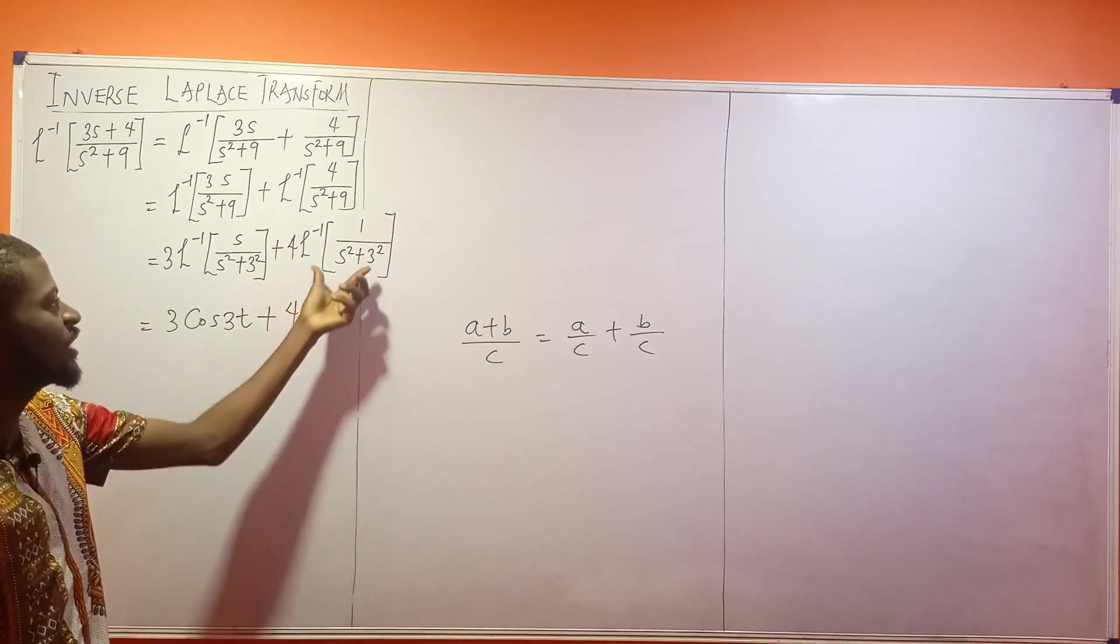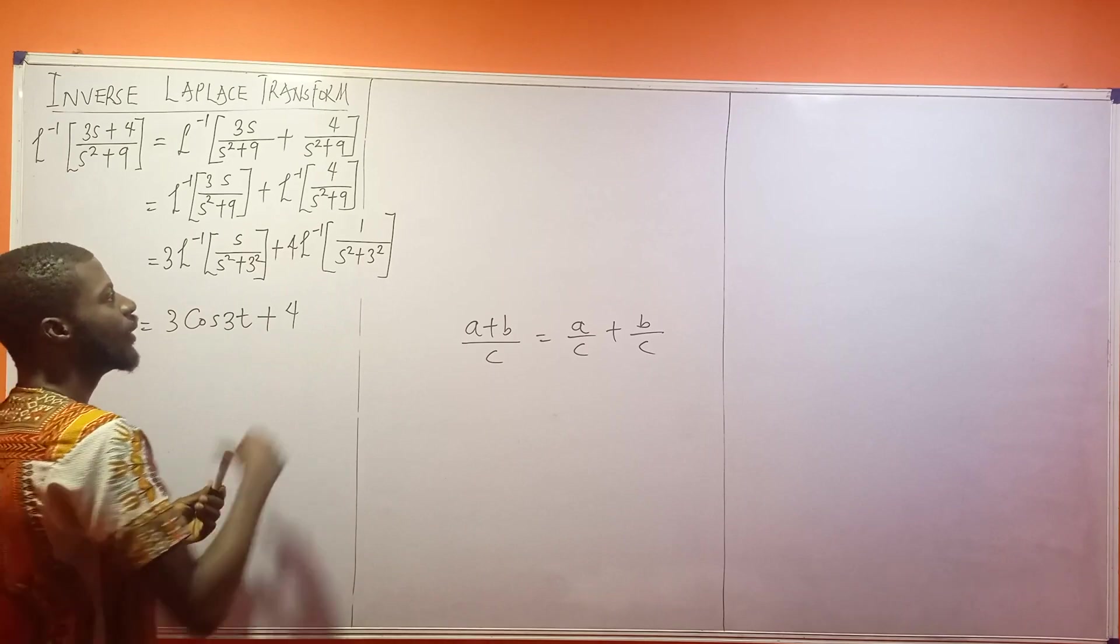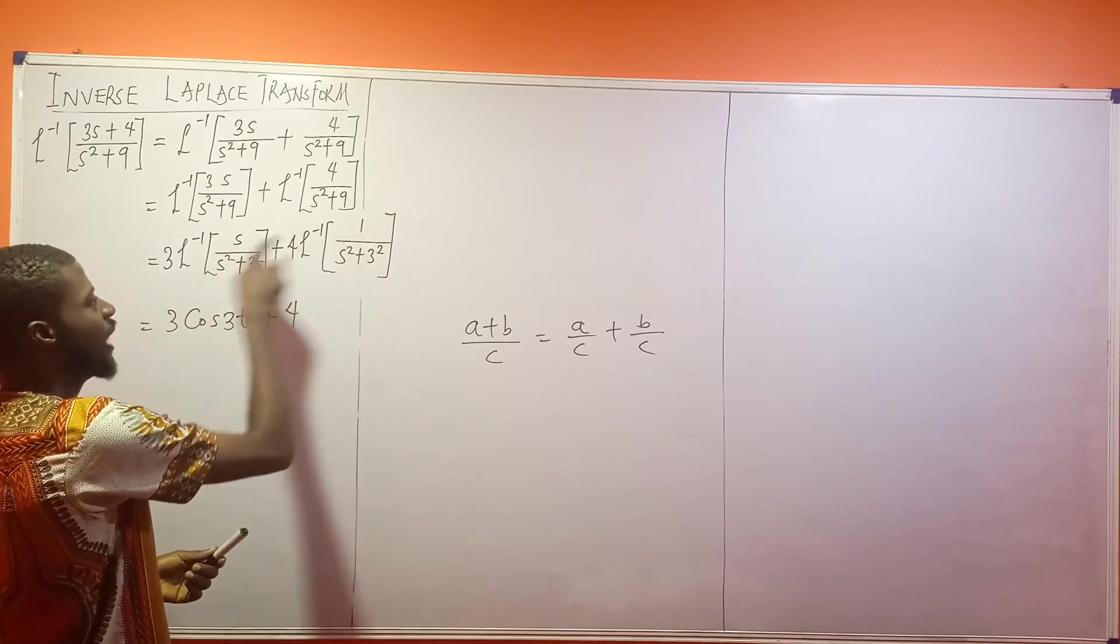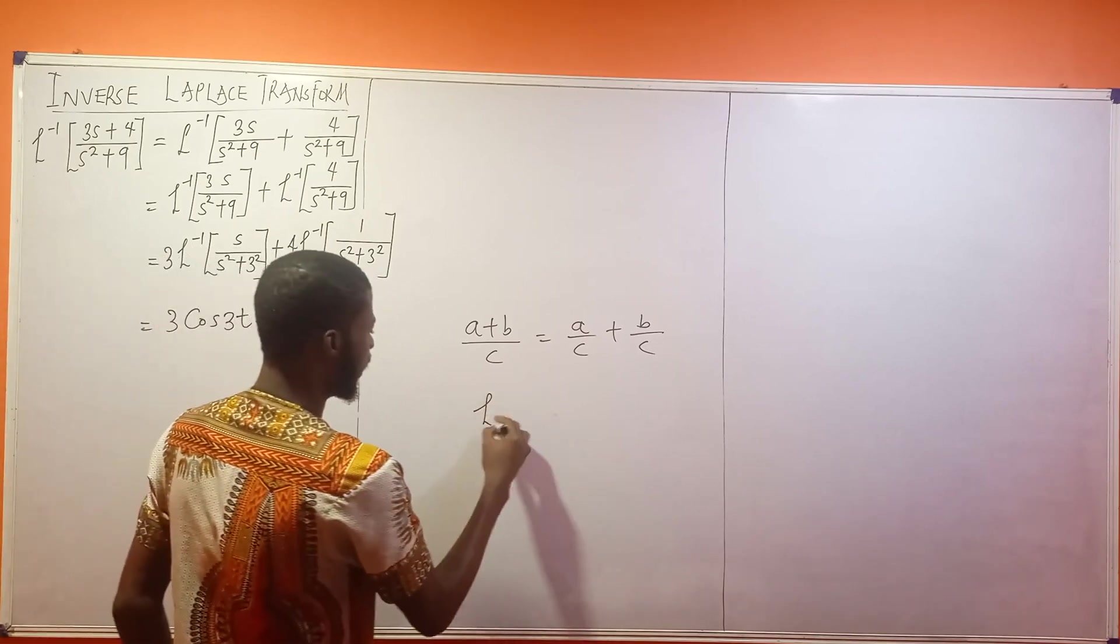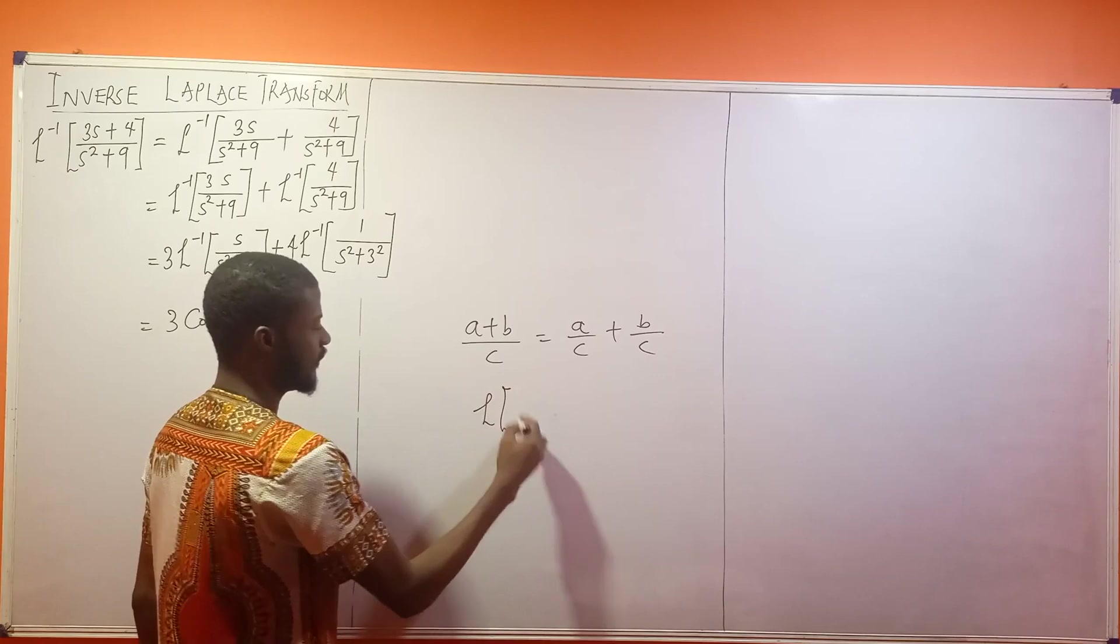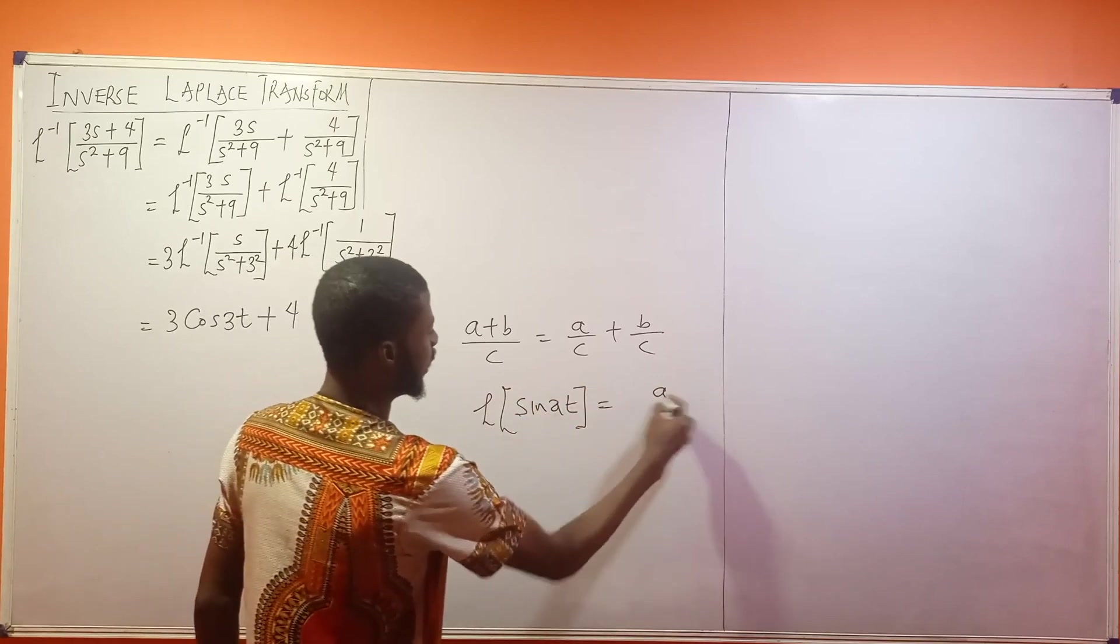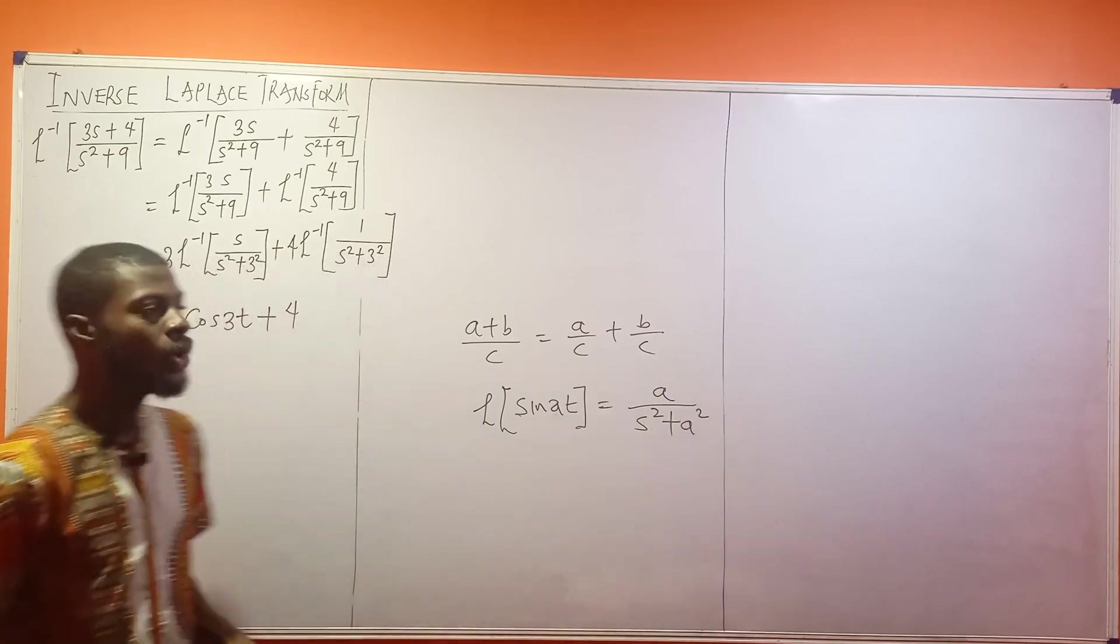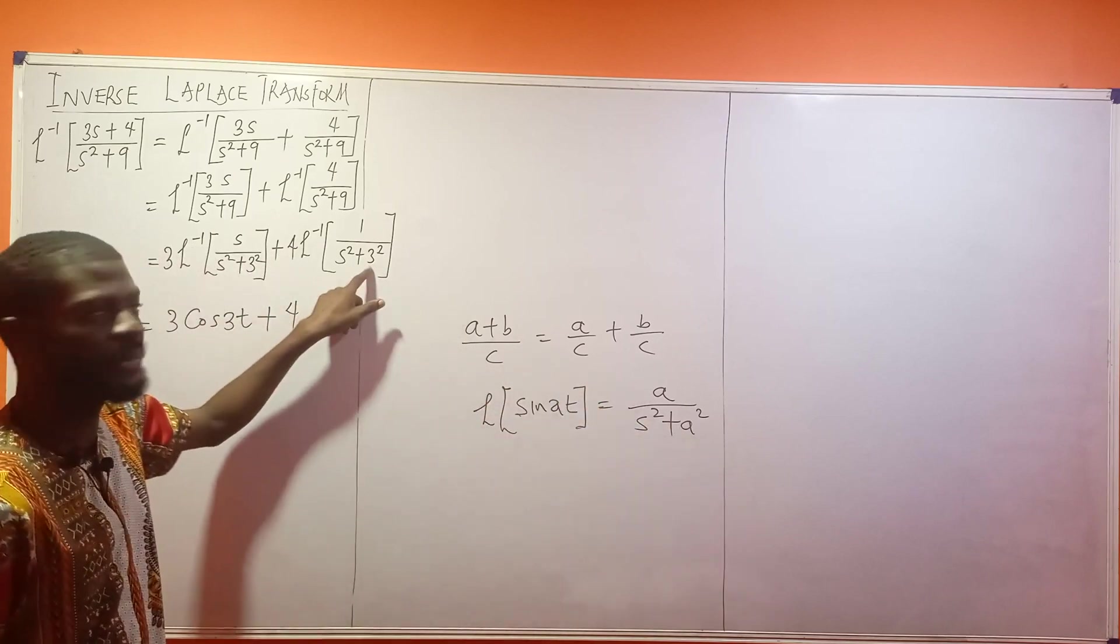4. Now I think this part would pose a little bit of issue for us. If you have a constant on top and not s, you are talking about sin. Now the Laplace transform of sin at is equal a over s squared plus a squared. Already our a here is what? 3. If you compare this, your a is what? 3.